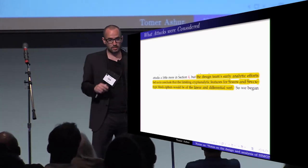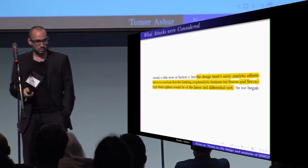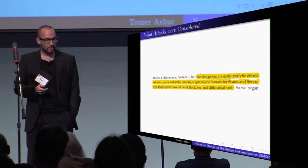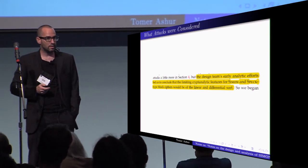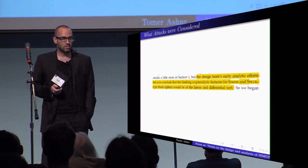So they also say what kind of attacks they considered, and they're saying that the design team's early analytic efforts led us to believe that the type of attacks that are relevant for Simon and Spec are of the differential and linear sort.